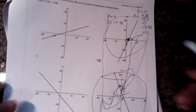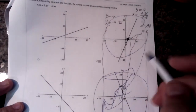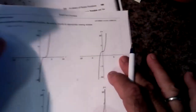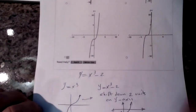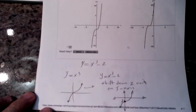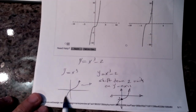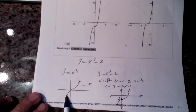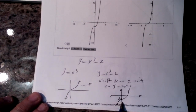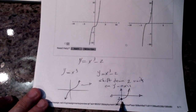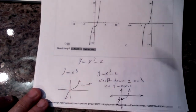Or you could use your graphing calculator to see which one is correct. We discussed the equation y equals x cubed, which looks like that shape. So if you take that and shift it down two units, this is what you have.